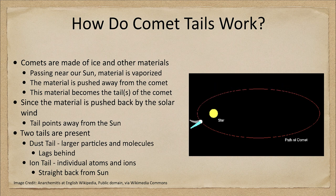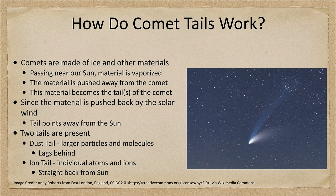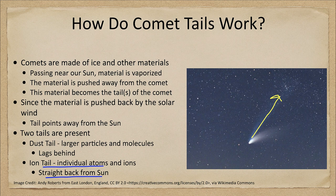You can see in this image both of those two tails that are present. Let's take a look at those two tails briefly. We saw one going straight back — that is the ion tail. It consists of individual atoms and ions, so it goes straight back from the Sun as individual particles.